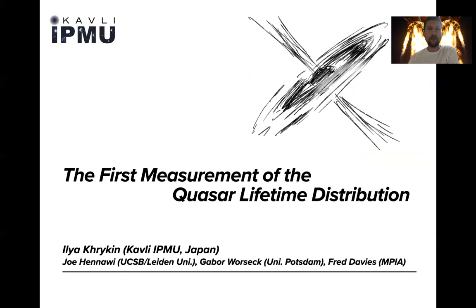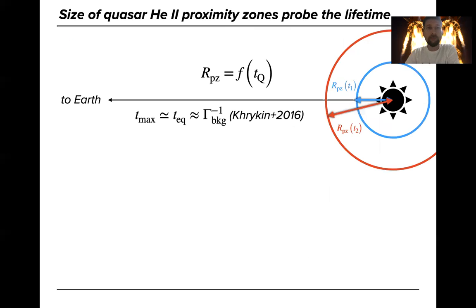Just a quick reminder, Quasar Lifetime is the timescale of single episodes of accretion on the supermassive black holes that power quasars. We use the extent of the so-called helium-two-proximity zones to measure it.